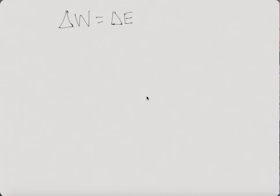In our particular case, we're looking at the change in kinetic energy, which is 1/2 mv final, that's the final velocity squared, minus 1/2 mv initial squared.